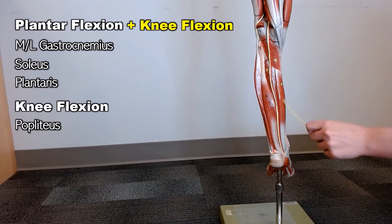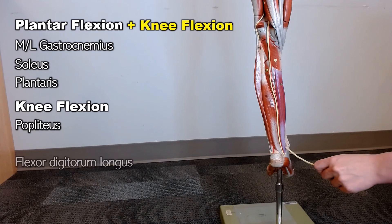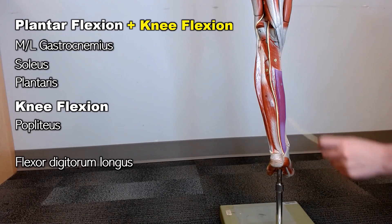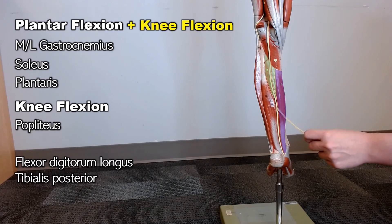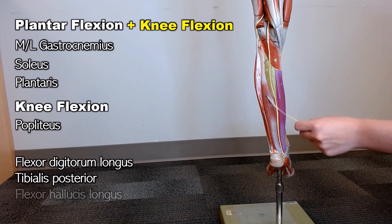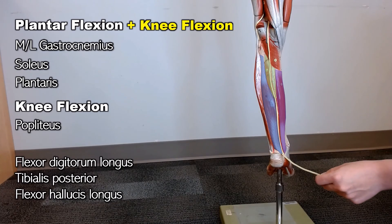This is the flexor digitorum longus next to the tibialis posterior and the flexor hallucis longus.